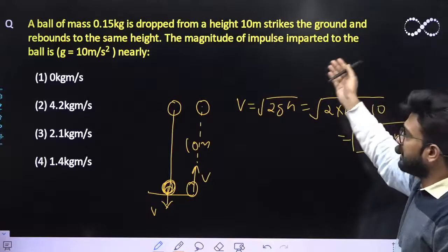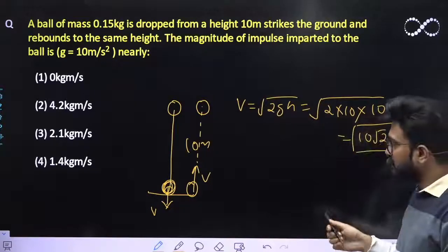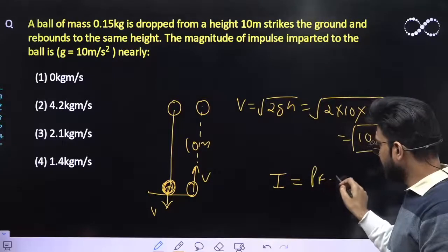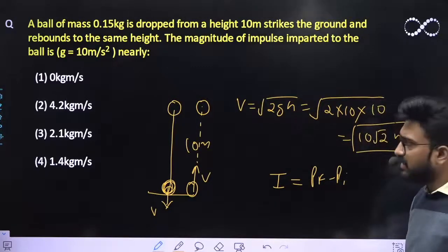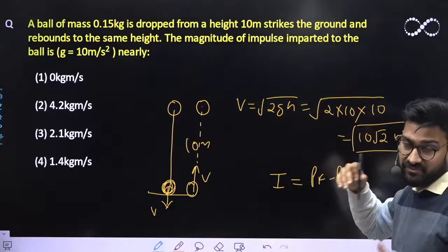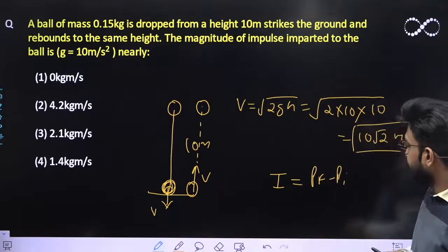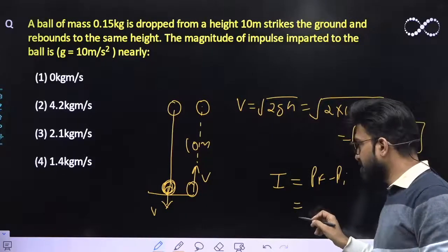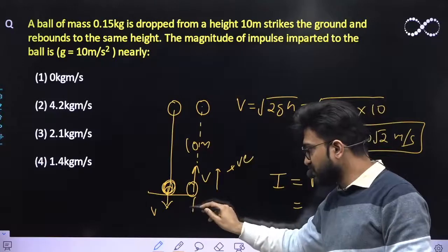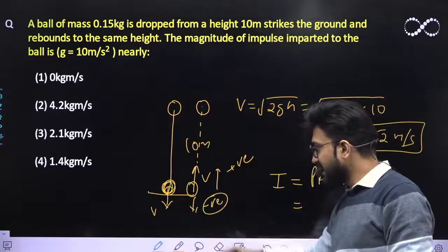You need to find out the magnitude of the impulse imparted to the ball. So the magnitude of the impulse is nothing but change in momentum: p_final minus p_initial, or it can be p_initial minus p_final also, because since only you have to find out the magnitude. This change in momentum—suppose upward direction is taken to be positive, so that means downward direction must be taken to be negative.